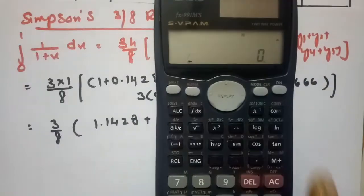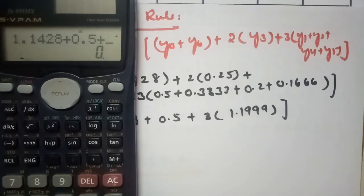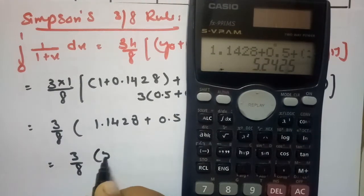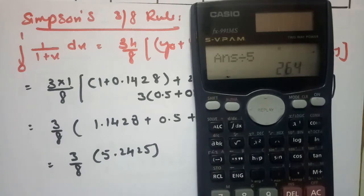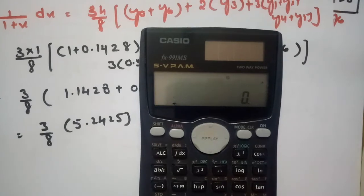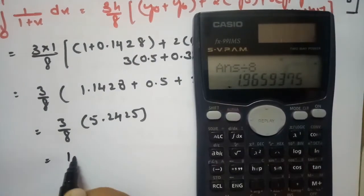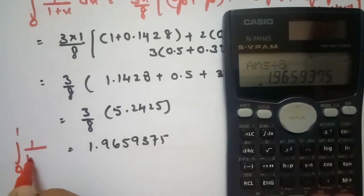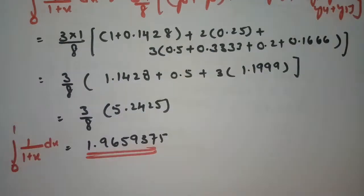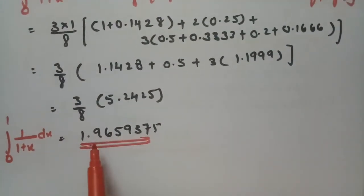Computing: 1.1428 + 0.5 + 3×1.1999 = 1.1428 + 0.5 + 3.5997 = 5.2425. Then (3/8) × 5.2425 = 1.9659375. So according to Simpson's three-eighths rule, the integral ≈ 1.9659, which is very close to 1.96.